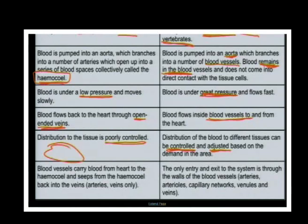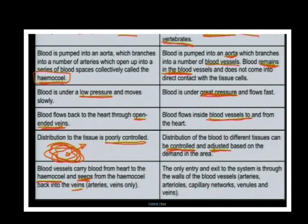In the open system, blood just swishes around the organs and diffusion takes place in and out. Blood seeps from the haemocoel back into open-ended veins. In the closed system, the only entry and exit is through the walls of the blood vessels: arteries, arterioles, capillaries, venules, and veins.